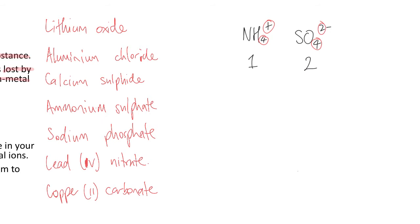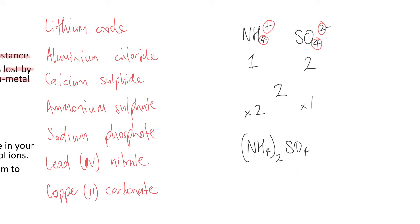The lowest common multiple of 1 and 2 is 2. So I times the 1 by 2 and the 1 by 1, giving 2 NH₄s and 1 SO₄. The formula is (NH₄)₂SO₄, with brackets around NH₄ and the subscript 2 outside to show that everything inside the brackets is multiplied by 2.